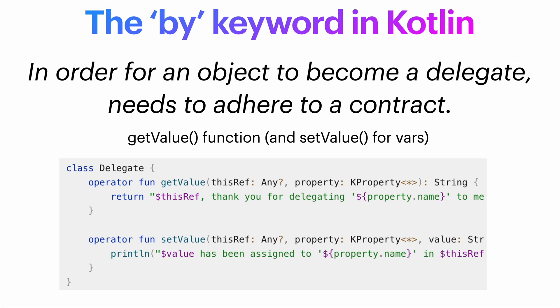I will borrow a simple delegate implementation here from the Kotlin docs so that you can get an idea. Of course, this is the way to implement your own delegate. For example, here we return the value but we also say thank you for delegating, and we say that this value has been assigned every time we set the value — something very simple.